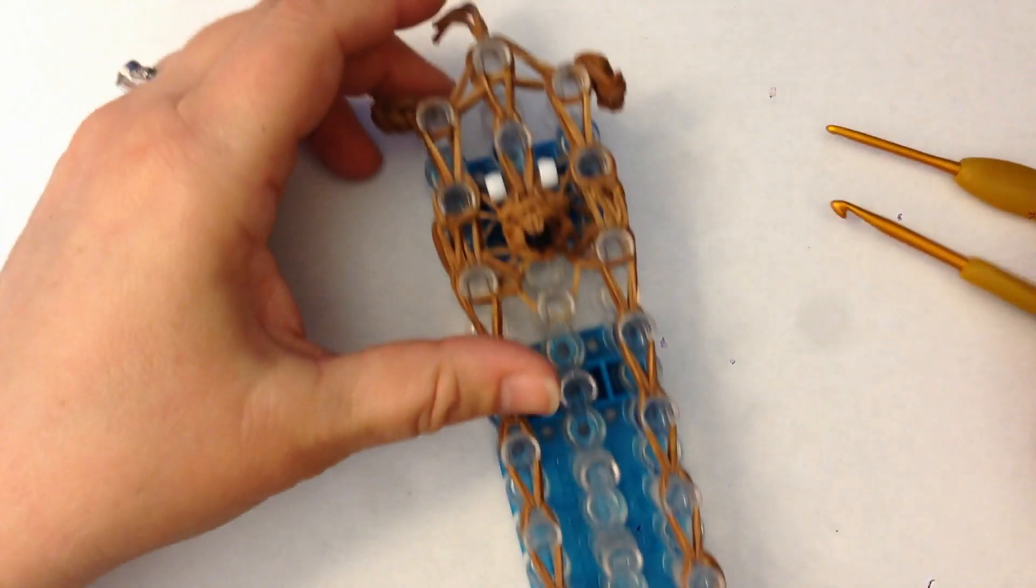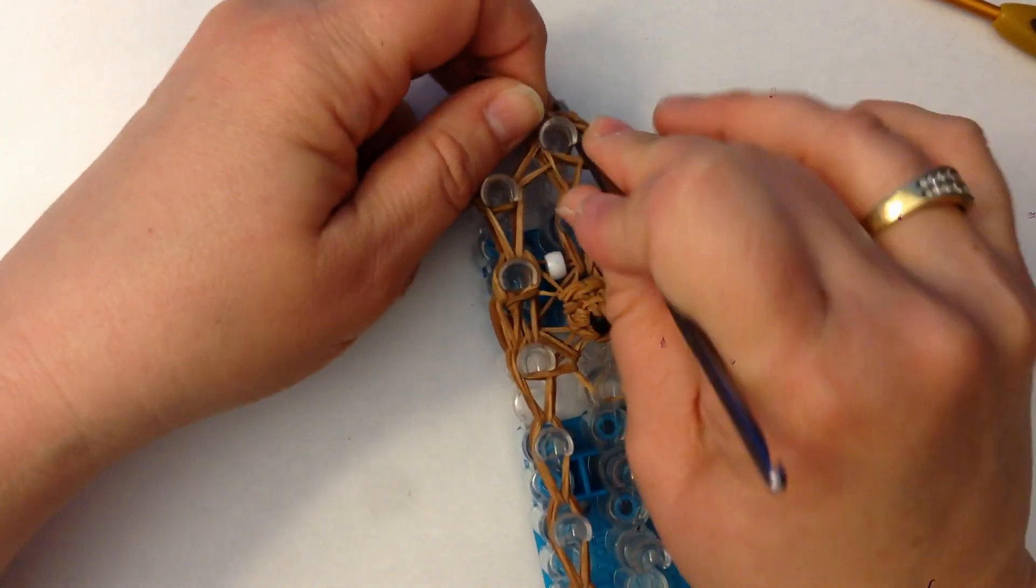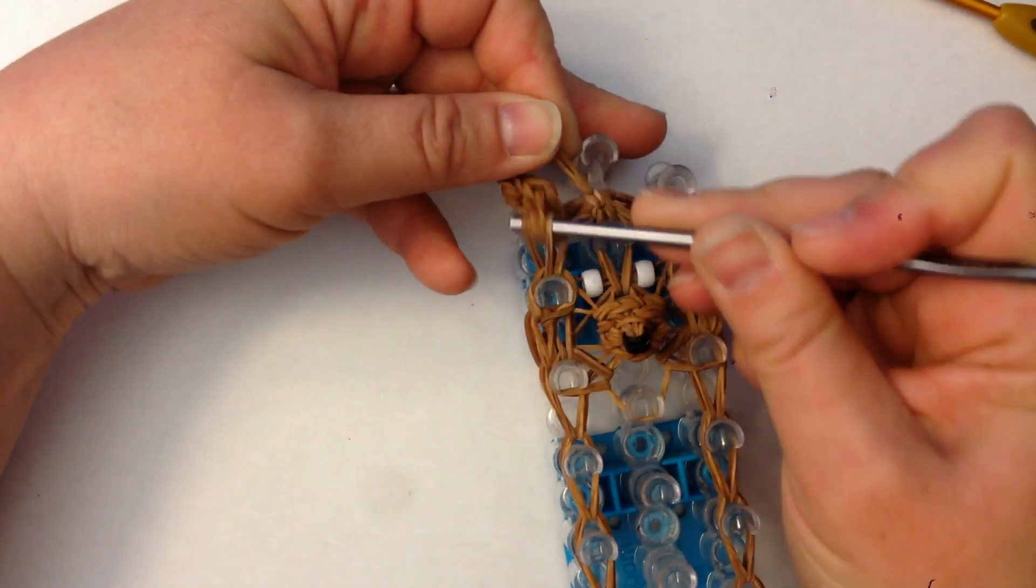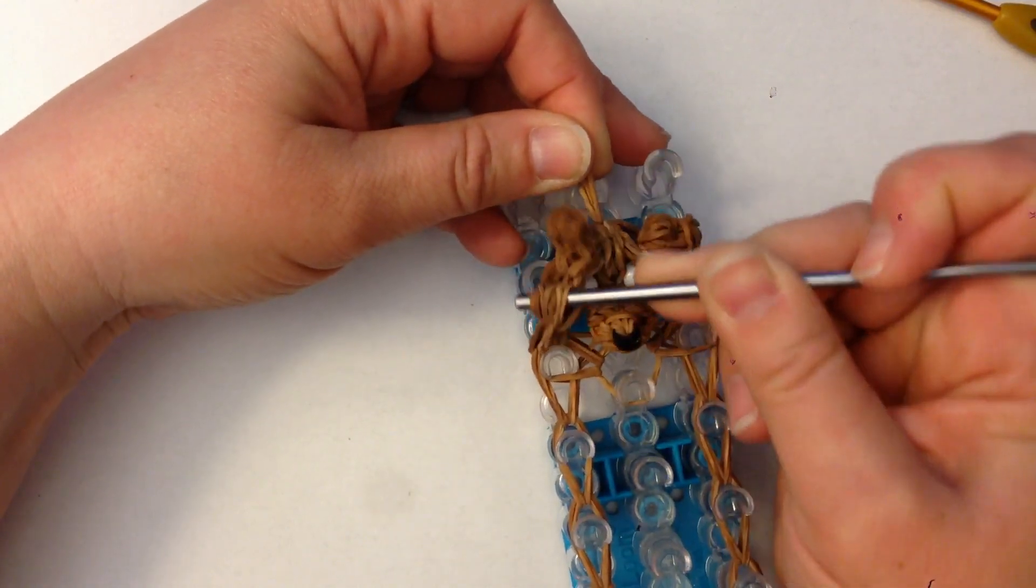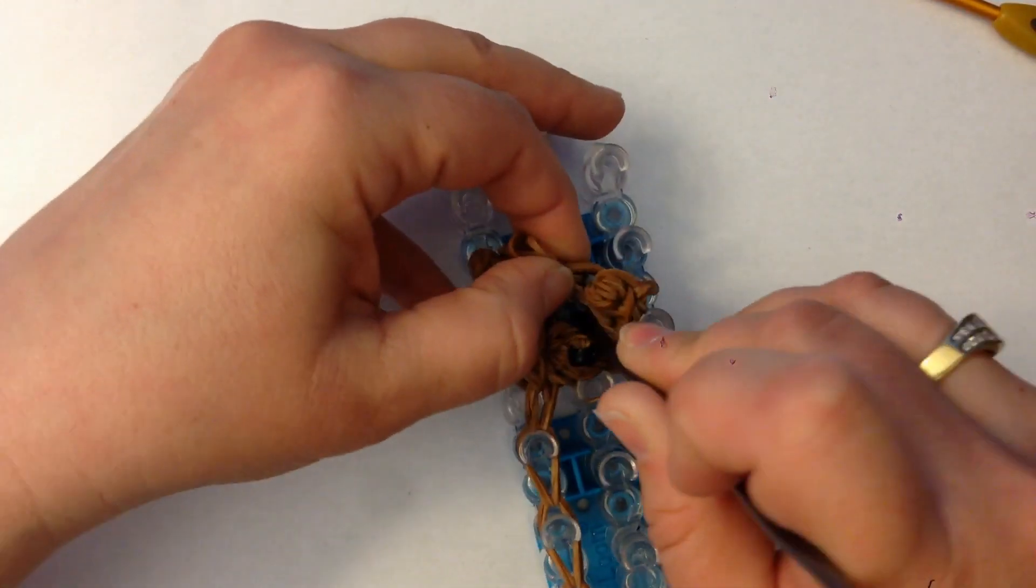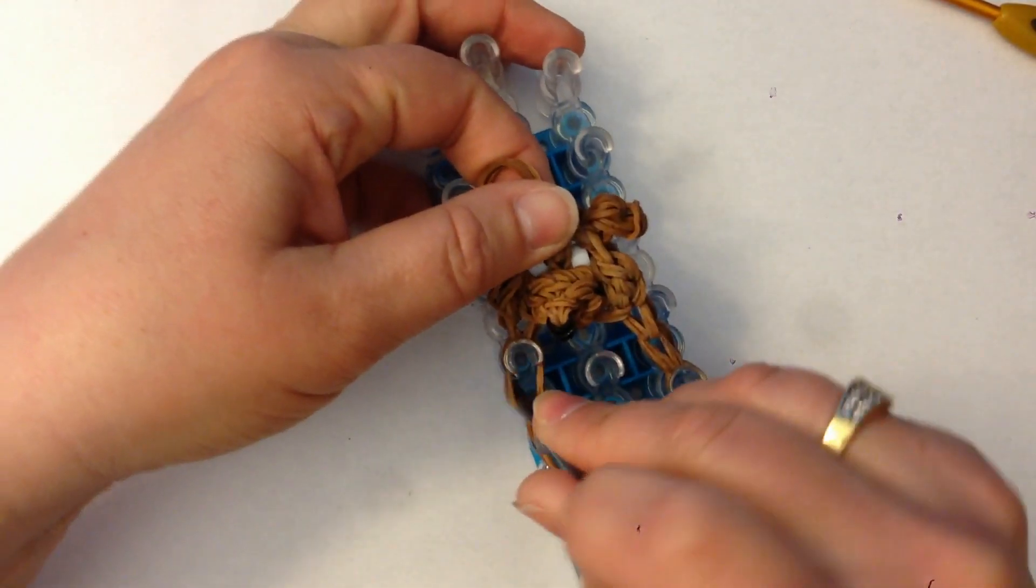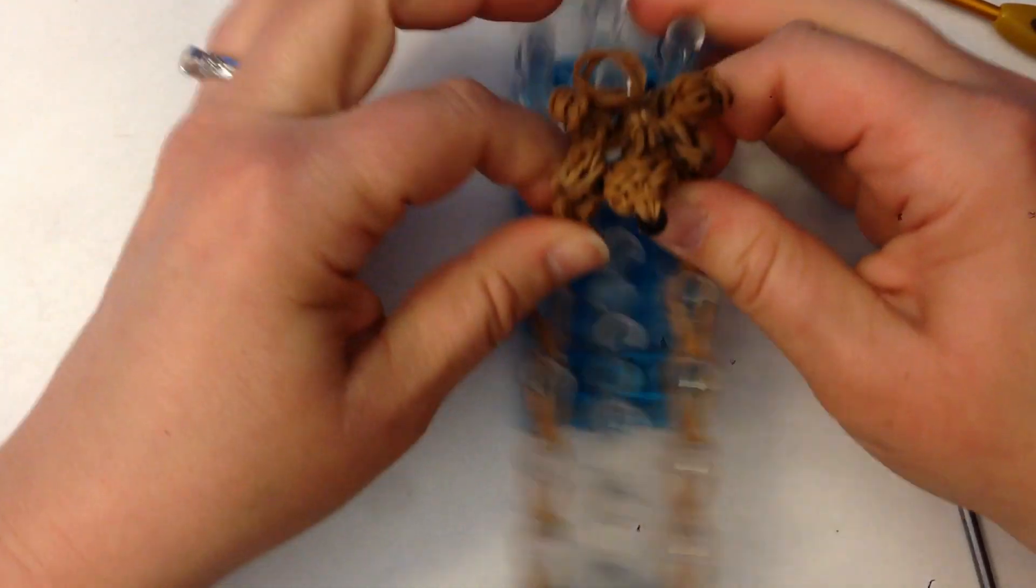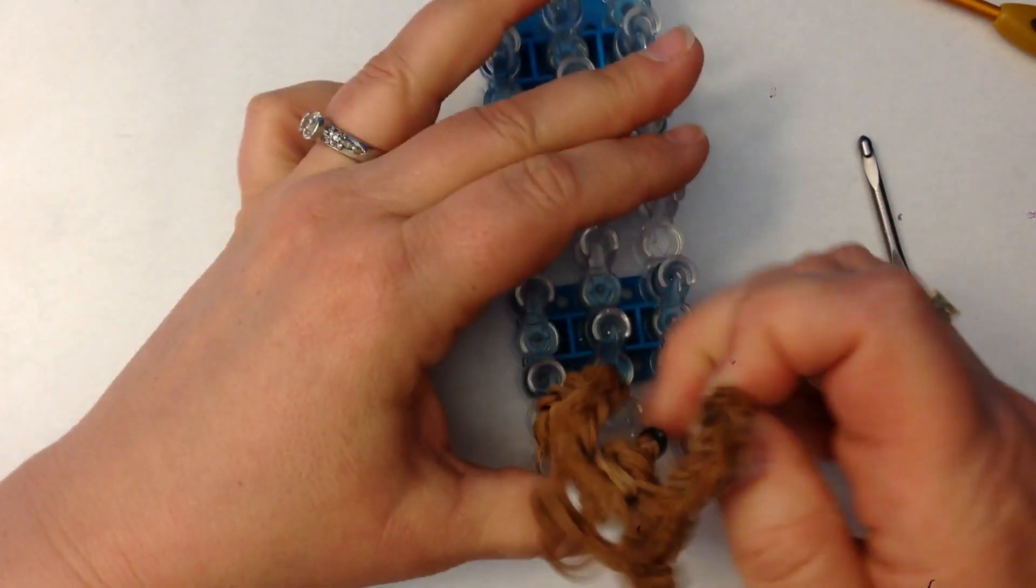So now we're ready to take our little dog off the loom and I'm going to use the back of a metal hook to help me do that. I prefer doing that because I don't like my bands to break and I feel this just helps relieve some of the pressure that can be on the bands.